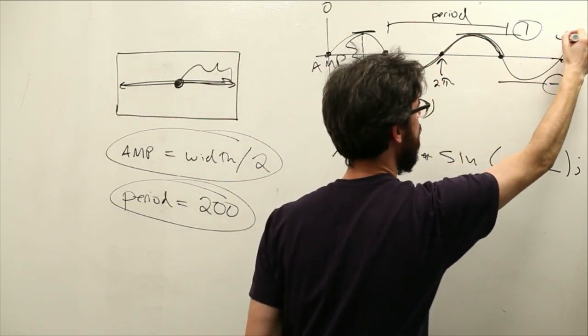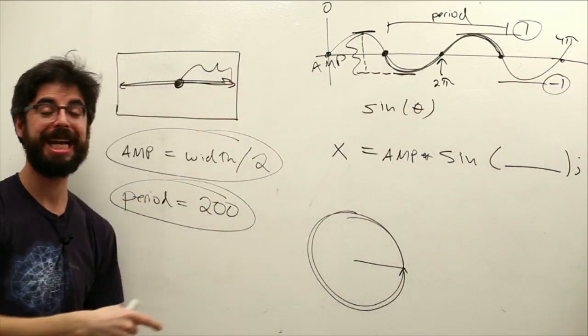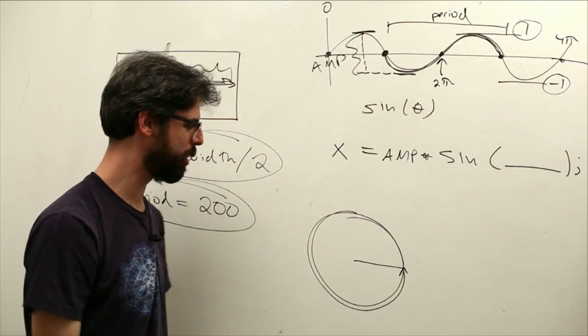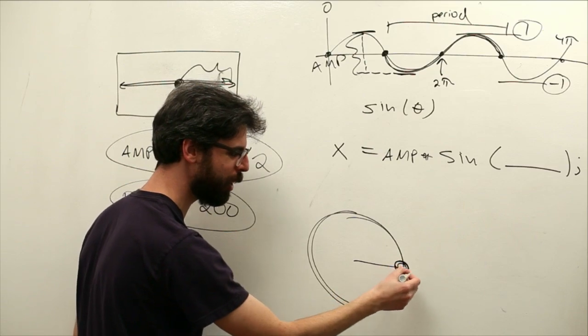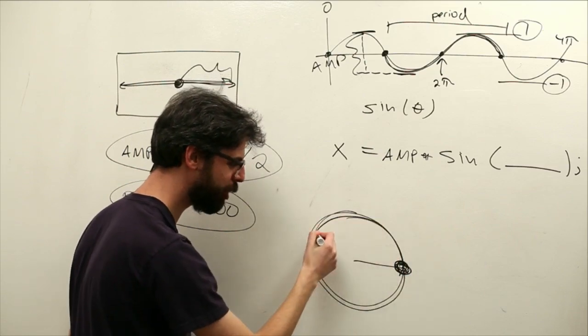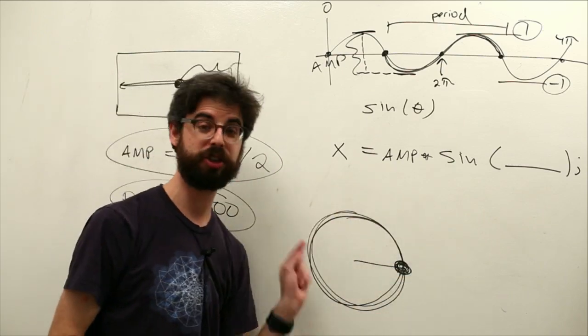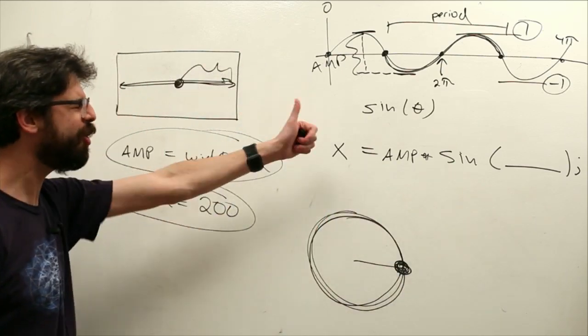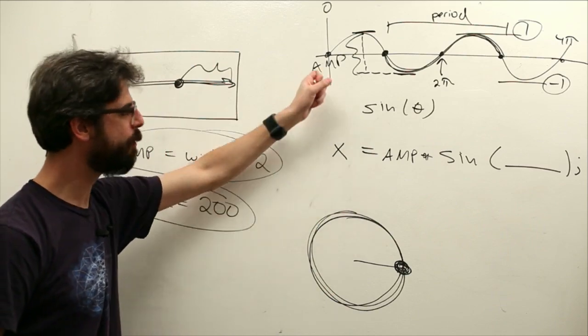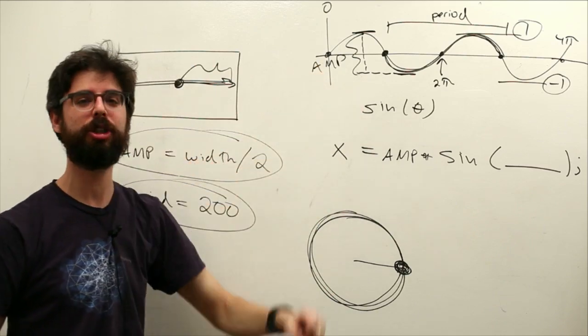So every 2pi in the sine function, it repeats, right? If you remember that in our polar to Cartesian coordinate transformation, it takes us 2pi radians to get all the way around. You can think of going around in a circle almost as an oscillating motion. So a full period for the sine function just the way it is, is 2pi.